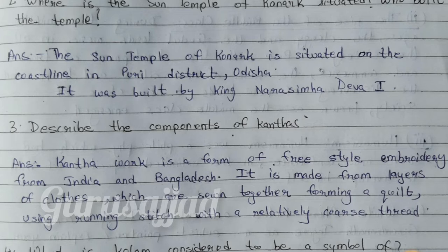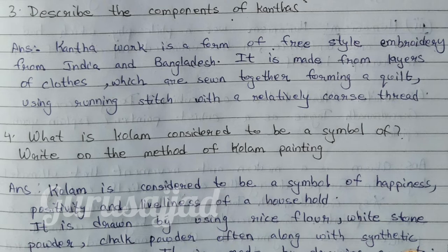Question number 3: Describe the components of Kantha. Answer: Kantha work is a form of freestyle embroidery from India and Bangladesh. It is made from layers of cloth which are sewn together, forming a quilt using running stitch with a relatively coarse thread.